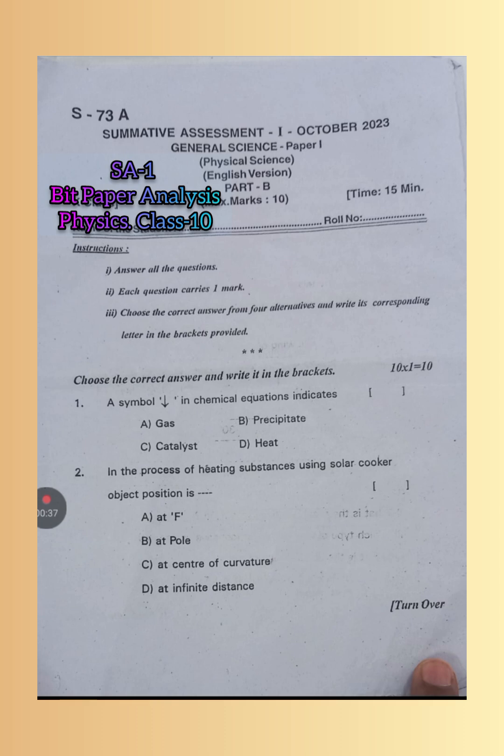First question: Choose the correct answer and write it in the brackets. A symbol downward arrow in a chemical equation indicates - always remember, the downward arrow indicates a precipitate. So B is the right answer.